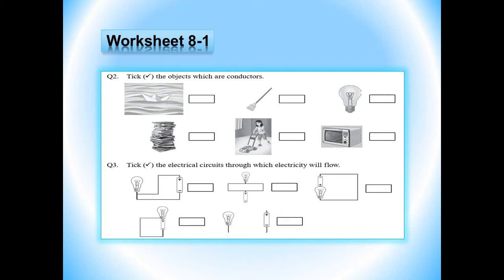Now let's do question number 3: tick the electrical circuits through which electricity will flow. The circuits are given here. We will see which circuits are closed circuits. In row number 1, just look carefully — circuit number 1 in row number 1 is the circuit through which electricity will flow. This is a complete circuit, so tick the first circuit in row 1. Now look at the circuits in row 2 — again, the first circuit in row 2 is the complete circuit, so you will tick the first circuit. Here our worksheet is completed.